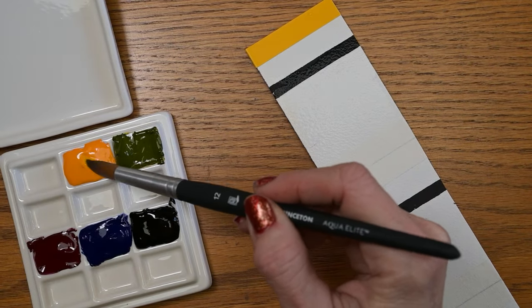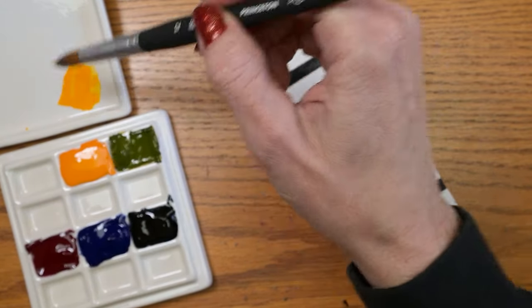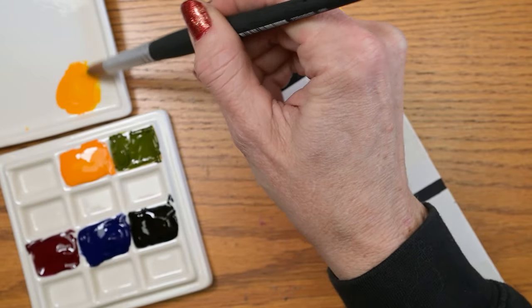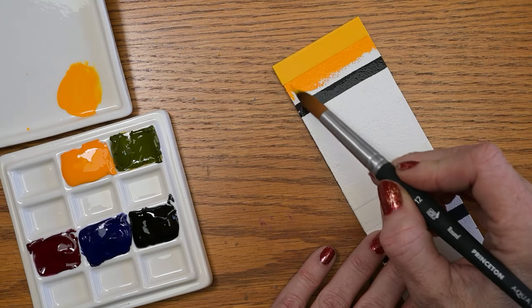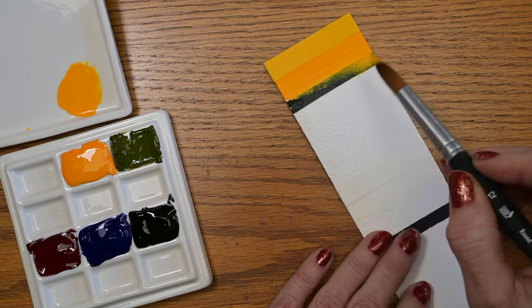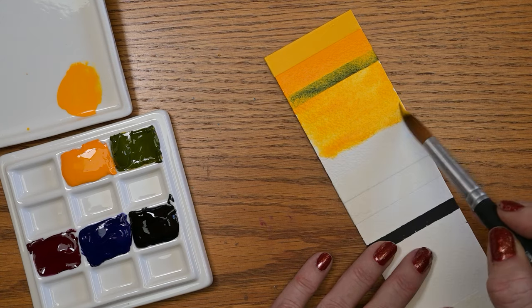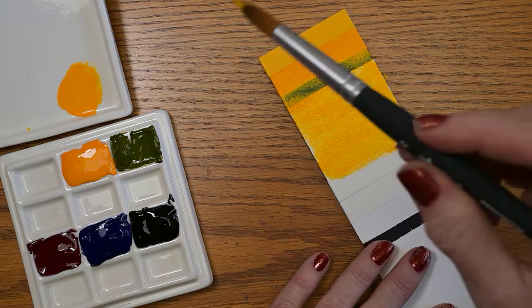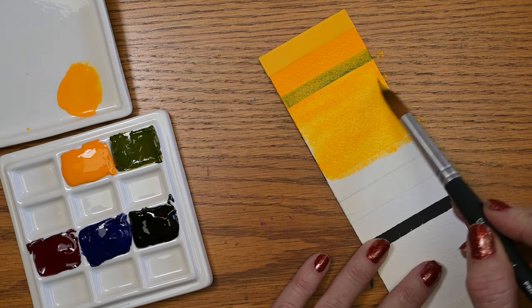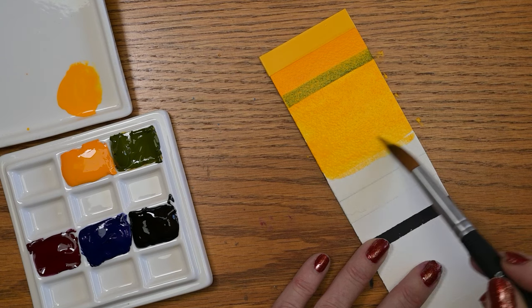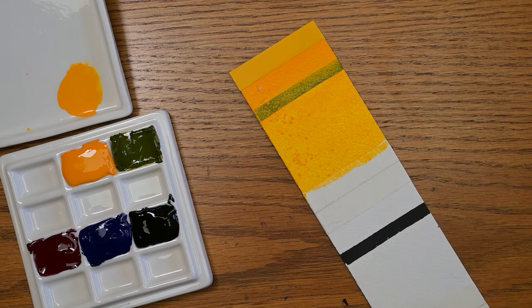This first one is cadmium yellow deep, PY35. These are still very wet, so it'll be interesting to see if I get a good representation of the color. I like to use my paints very dried down, but I want to see them right now. It's a three-star lightfast rating. The square on the front makes it seem like it's opaque, which would make sense for cadmium, but there's a thing on the side of the tube that says ST, so I'm assuming that means it's staining.